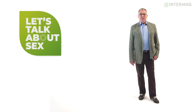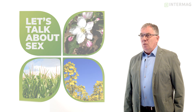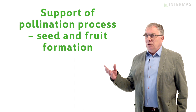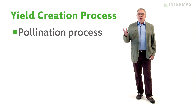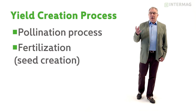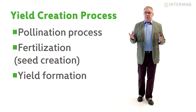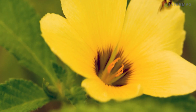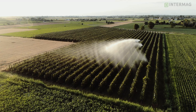For today I have prepared for you a very exciting topic. I will talk about the sex of plants. I think you will find this very interesting and exciting. Why is it so important? We are thinking about yield creation. What is necessary to create a yield? We need flowers, we need the pollination process, we need fertilization — which means seed creation — and this has a direct effect on yield. Yield is the most important task of agricultural production. We would like to have high yield and high quality. Flowering, the pollination process, and the fertilization process all have a direct effect on yield creation.